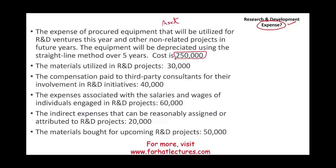We have to be careful here. Generally speaking, if we buy equipment used in an R&D project, we expense it as R&D cost. However, this asset has an alternative use — it's not solely for the R&D project itself. Because it will be used in non-related projects in future years, we depreciate it. So: $250,000 divided by 5 equals $50,000.